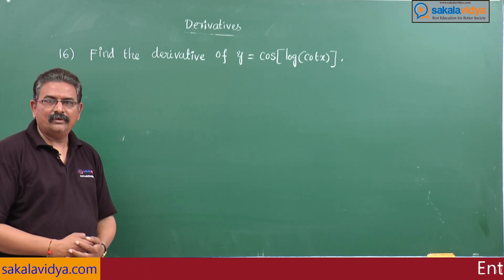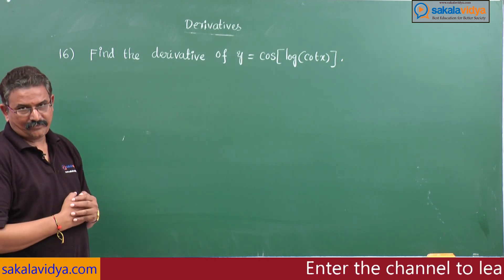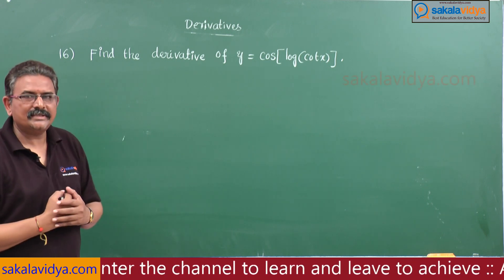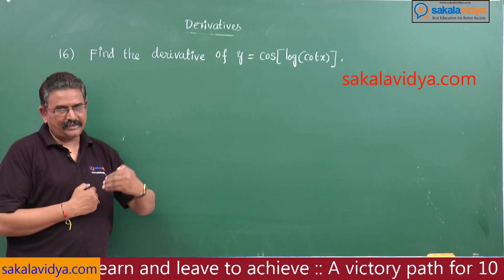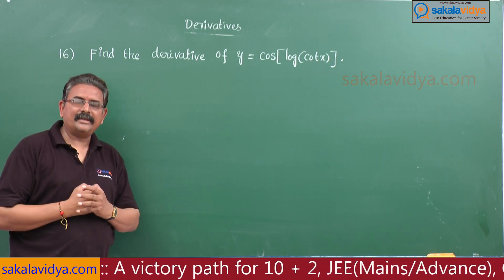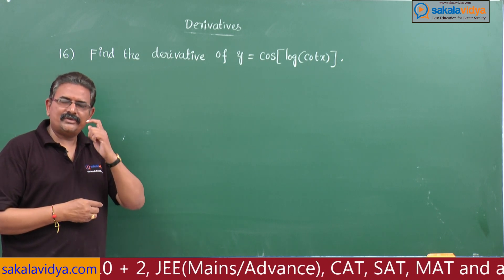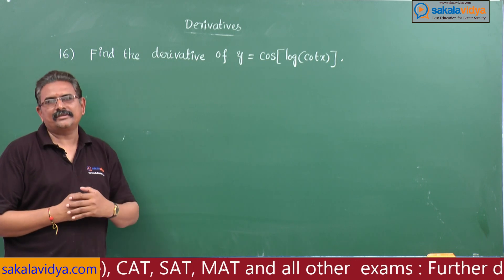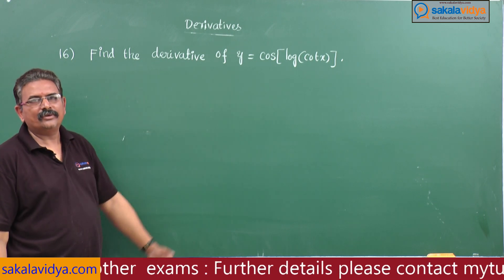Let us discuss the next problem. Find the derivative of y = cos(log(cot x)). The derivative of cos is minus sin x; the derivative of log x is 1/x; and the derivative of cot x — very important — is minus cosec²x. If you concentrate on these three formulae along with the chain rule, this problem can be easily solved.